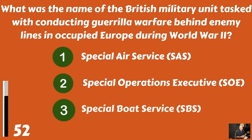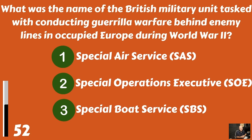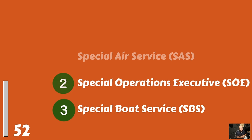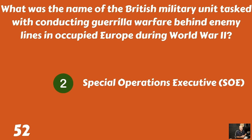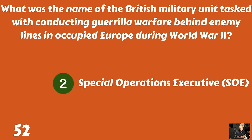What was the name of the British military unit tasked with conducting guerrilla warfare behind enemy lines in occupied Europe during World War II? The Special Air Service? The Special Operations Executive? Or the Special Boat Service? It was the SOE, the Special Operations Executive.